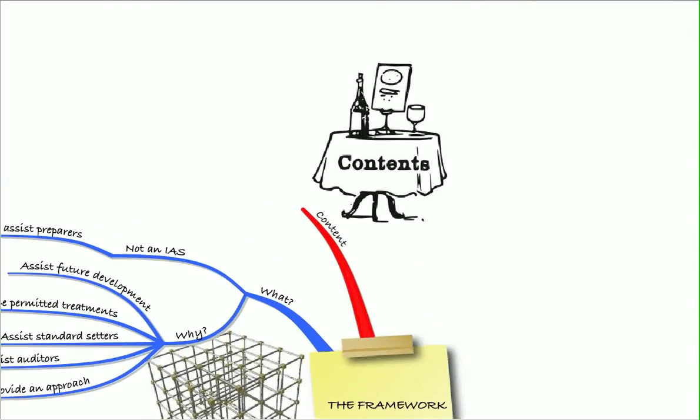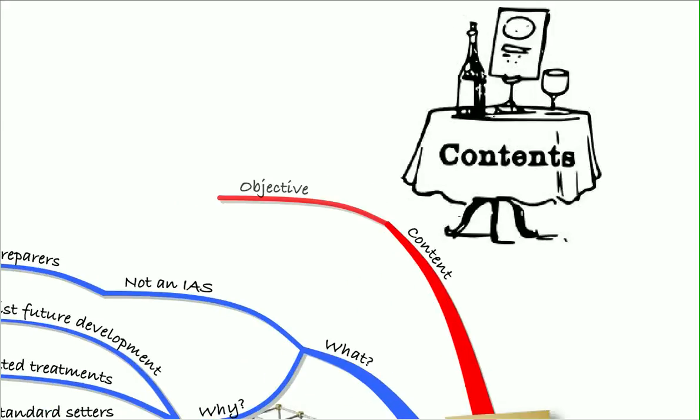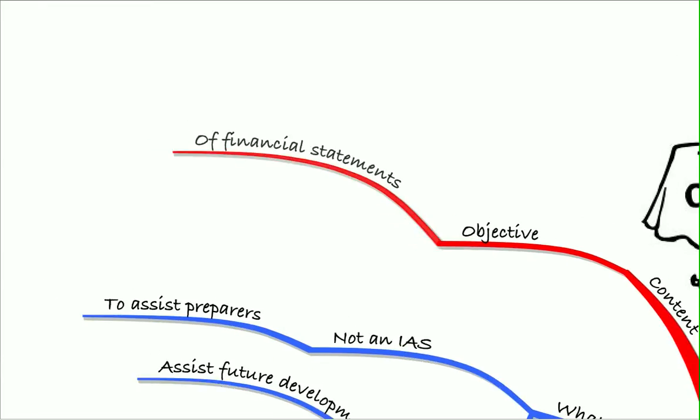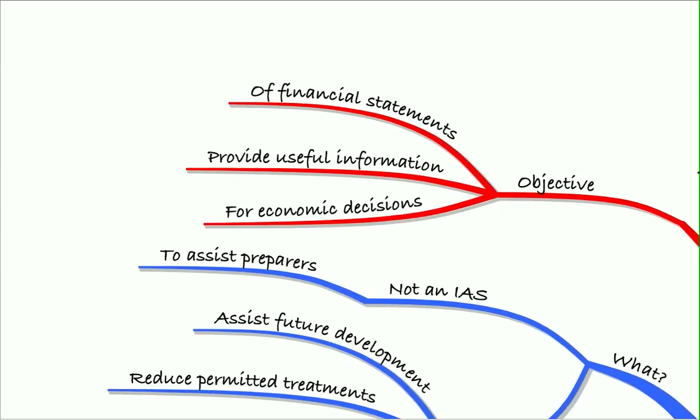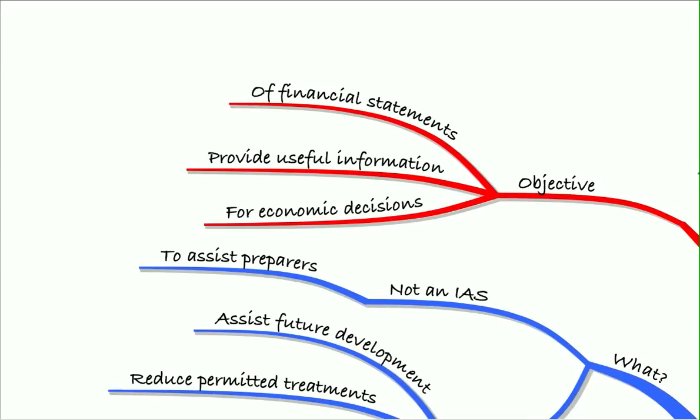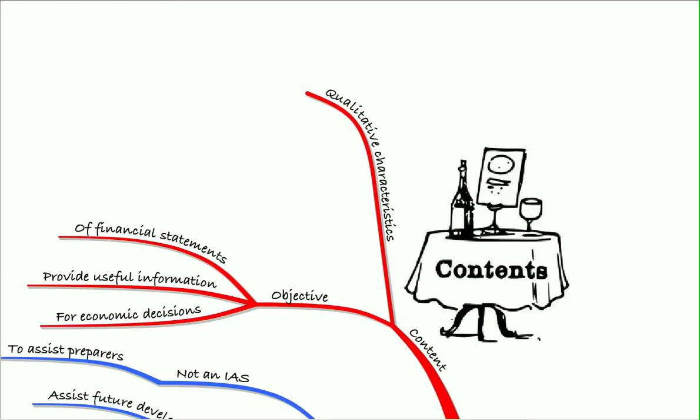So the content of the framework document sets out the objective of financial statements, and that is to provide useful information for economic decisions by the users. To do that, the qualitative characteristics of the financial statements are outlined.